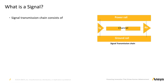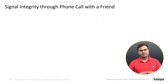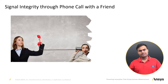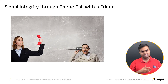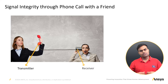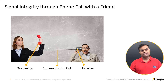A signal transmission chain consists of a transmitter, a channel, and a receiver. To understand signal integrity, let's take an example of a phone call with a friend. Imagine you are talking to a friend on a mobile phone. Your voice is the signal that travels from your phone to your friend's phone through mobile towers and wireless transmission.